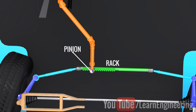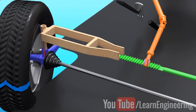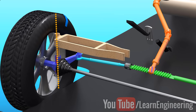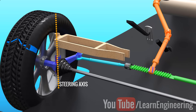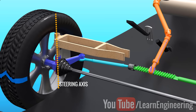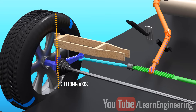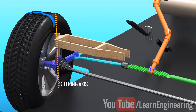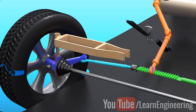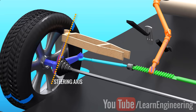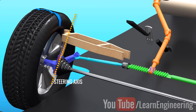If you observe closely, you can see that the wheels are turning along a particular axis. This axis is called the steering axis. In the current demonstration, you can see that the steering axis is perfectly vertical. However, this is not normally the case in practice. In practice, the steering axis will be slightly inclined to the vertical, as shown. This angle is called the caster angle.